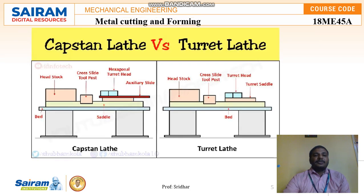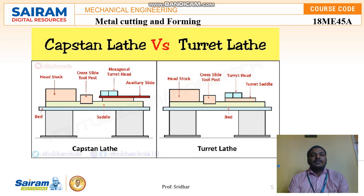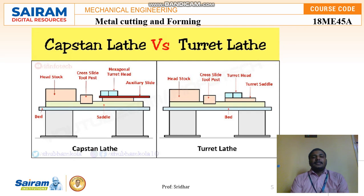Now we will see the differences in the diagrams. In the capstan lathe, instead of a tailstock there is an auxiliary slide with a hexagonal turret, fixed on the movable saddle. The remaining parts — lathe bed, tool post, cross slide — remain the same. The major difference between capstan and turret lathe is the movable saddle versus the auxiliary slide. The construction varies, but the machining process is the same. Both are semi-automatic and both can accommodate 6 to 8 tools.